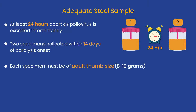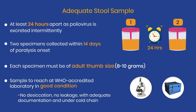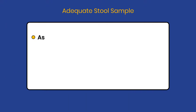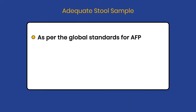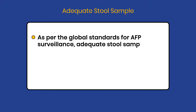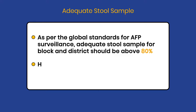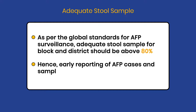Each sample should be of an adult thumb size and reach the lab in good condition. As per the global standards for AFP surveillance, the adequate stool sample rate for block and district should be above 80%. Hence, early reporting of AFP cases and sample collection is important.